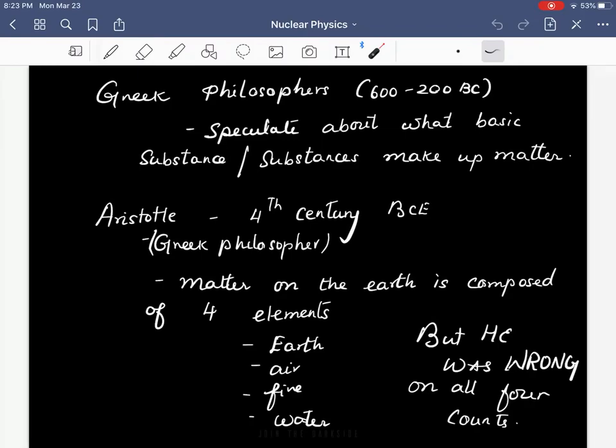Aristotle, a great philosopher of the 4th century BC, said that matter on Earth is composed of one or more of four elements: earth, air, fire, and water. But he was actually wrong on all four counts.